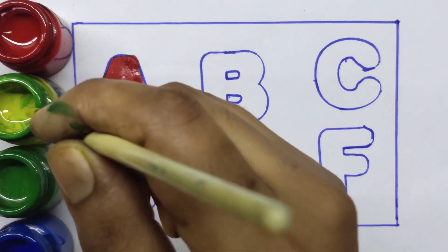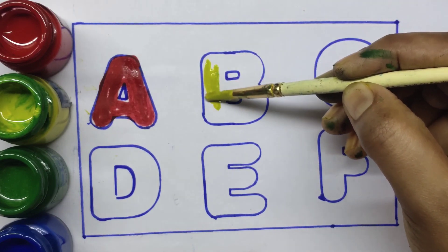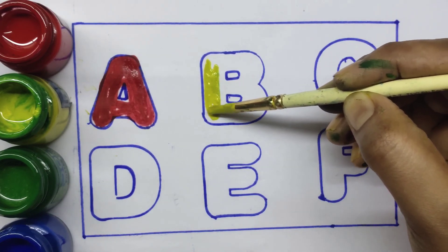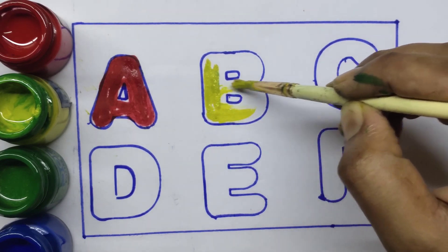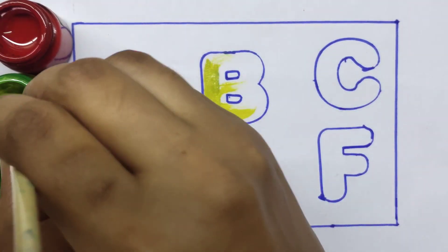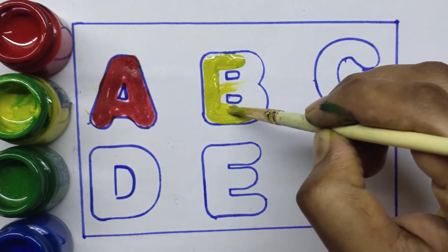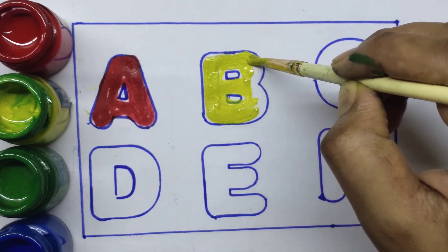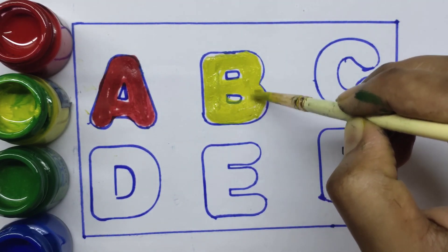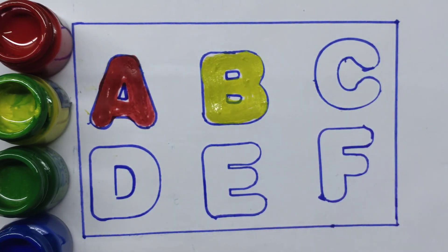Yellow color. B. B for ball. Ball means gain. B for ball.